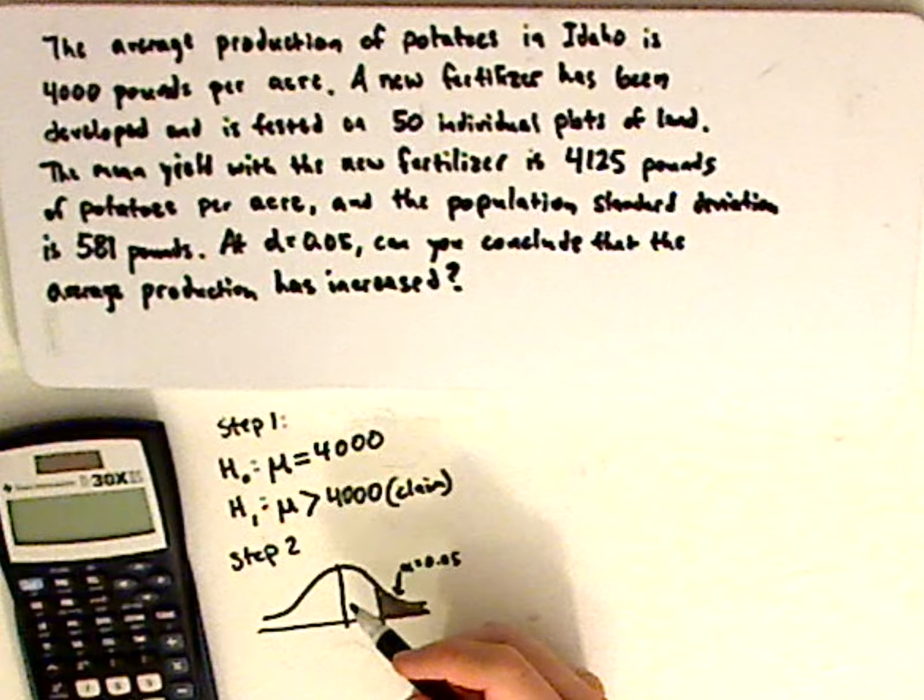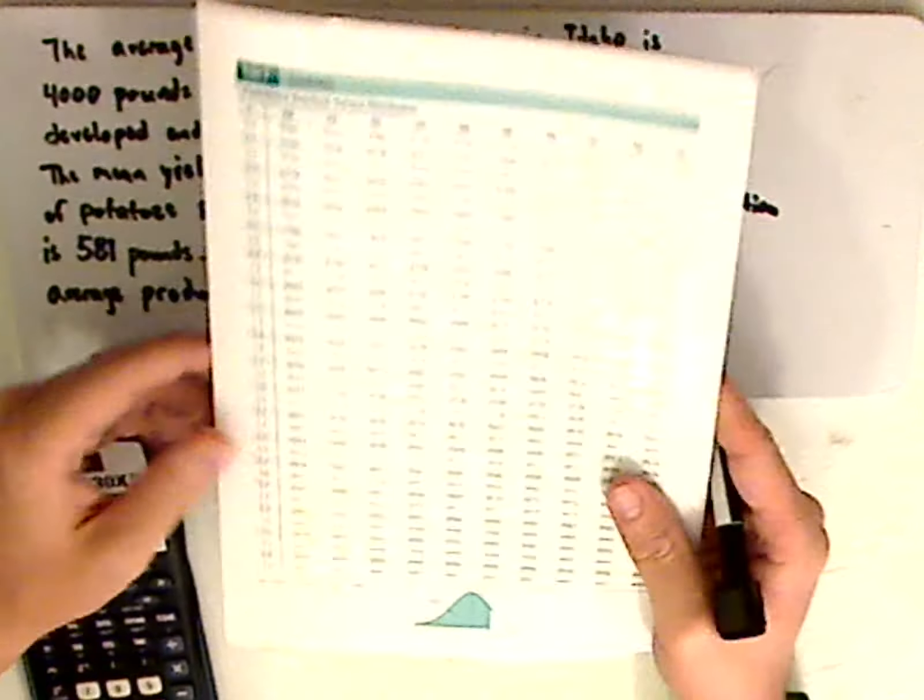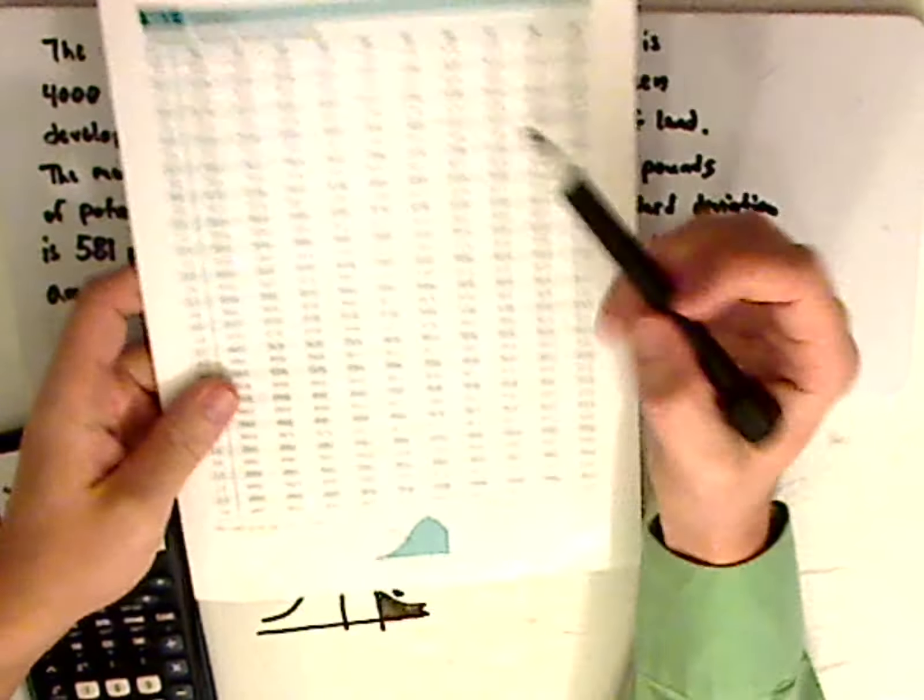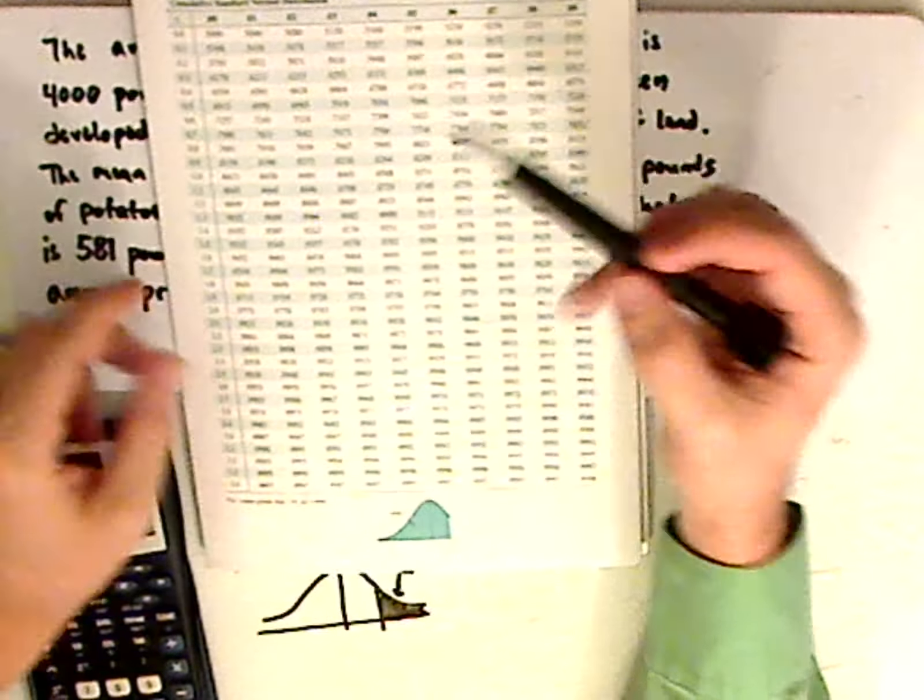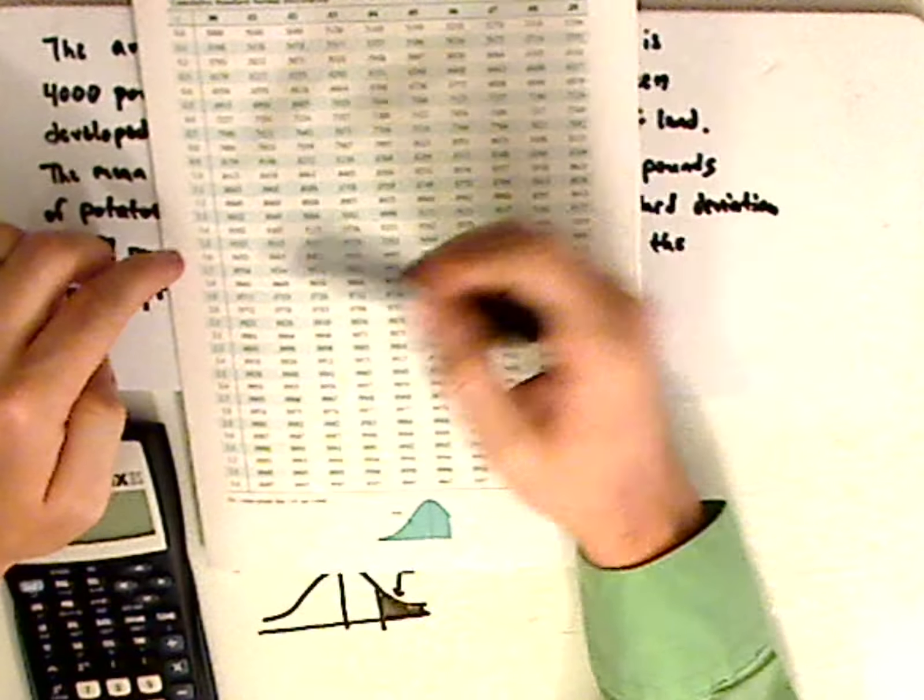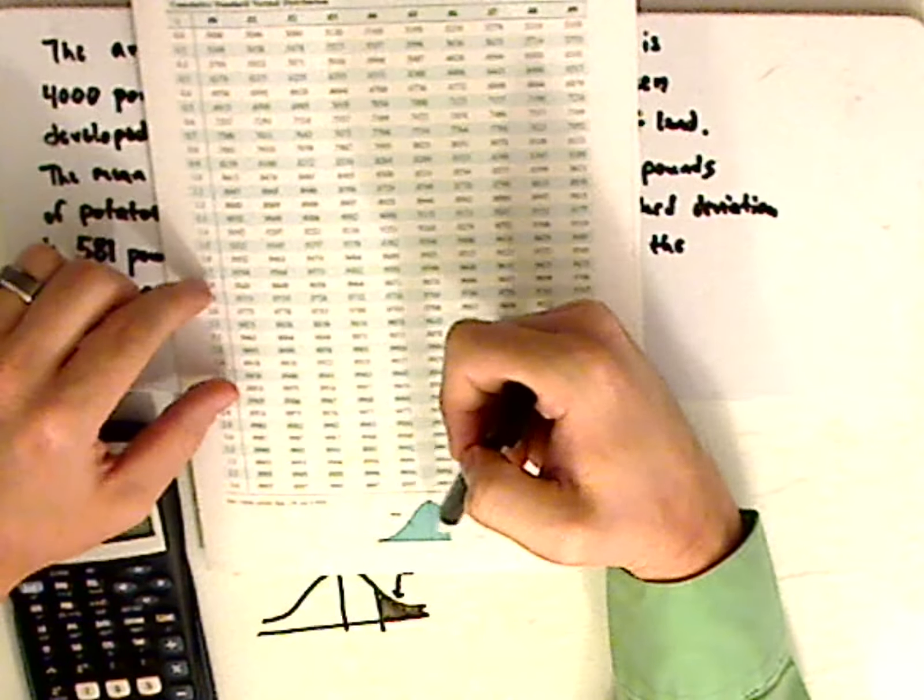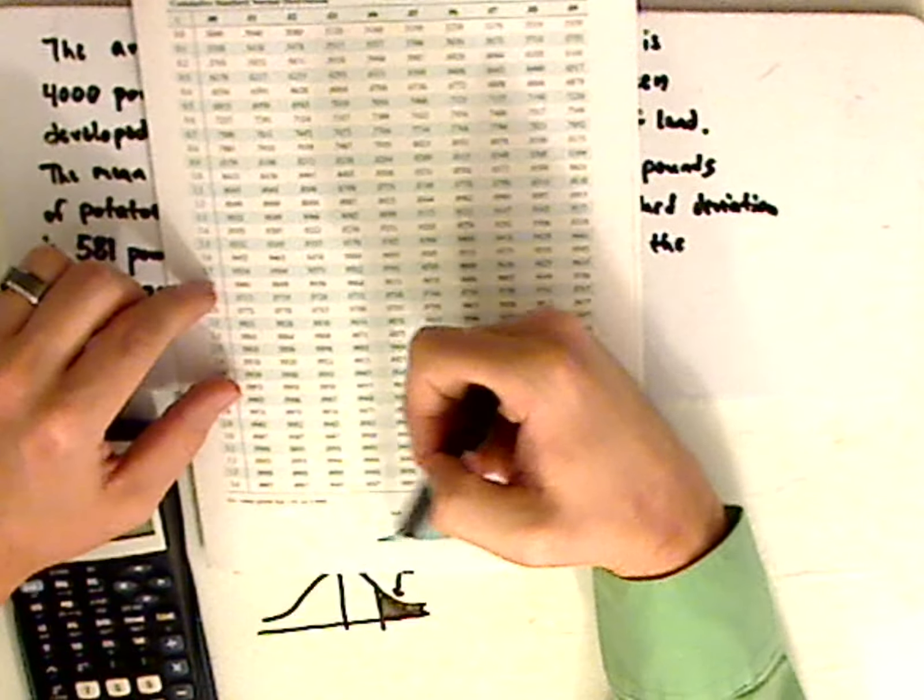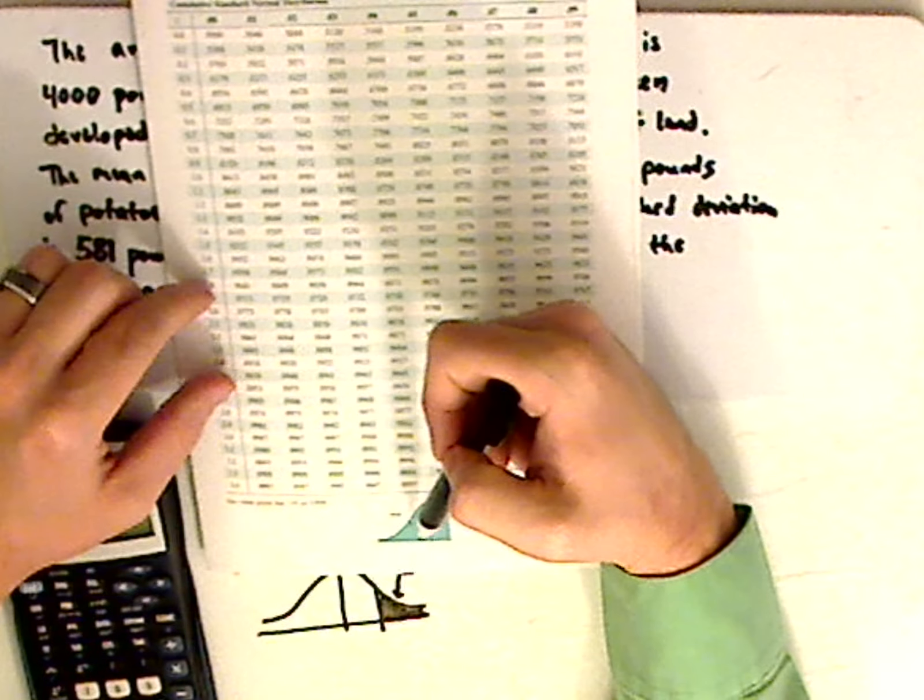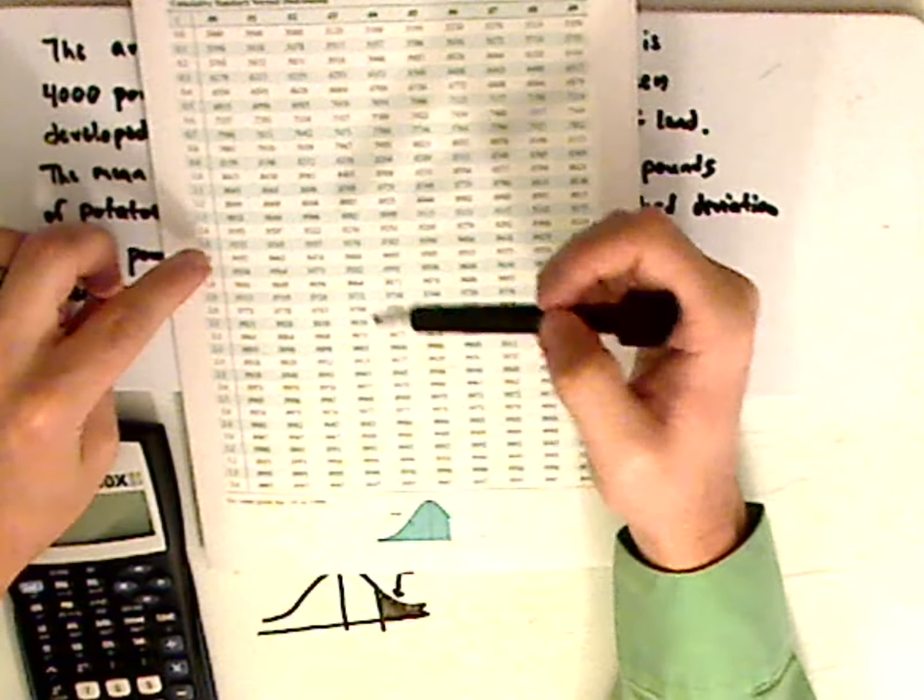And so you look at your chart, and this is a z-table, so you want to look at the probability here, notice on the graph that the area is to the left of it, so it would be 95% on the table.